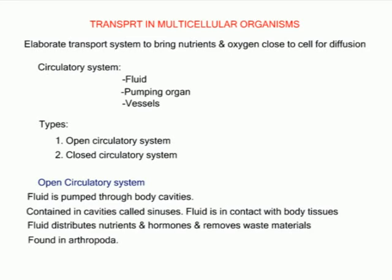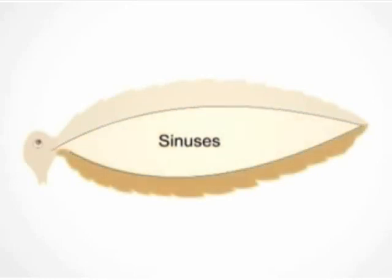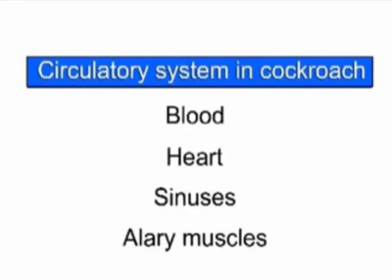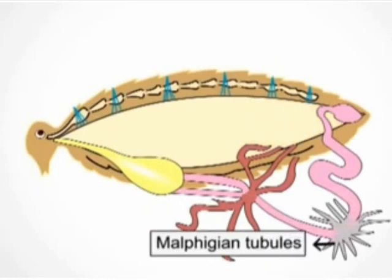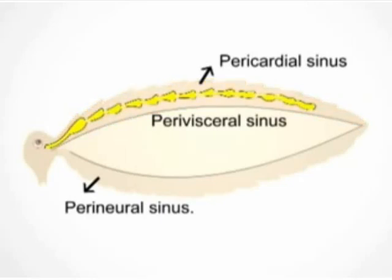In the cockroach, the circulatory system is an open one and blood flows in body spaces called sinuses. The system consists of blood, the heart, sinuses and alary muscles. The blood is white in colour because it lacks haemoglobin and does not transport respiratory gases; however, it transports nutrients to all body cells and collects waste materials, delivering them to the excretory organs called the Malpighian tubules. The body cavity is divided into three sinuses: the dorsal pericardial sinus, which contains the heart; the middle perivisceral sinus, which contains visceral organs; and the ventral perineural sinus, which surrounds the ventral nerve.